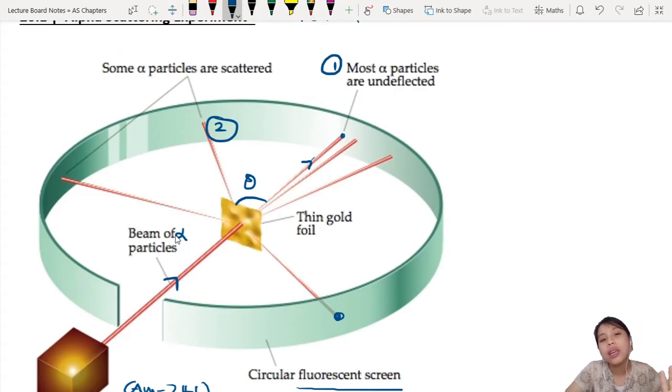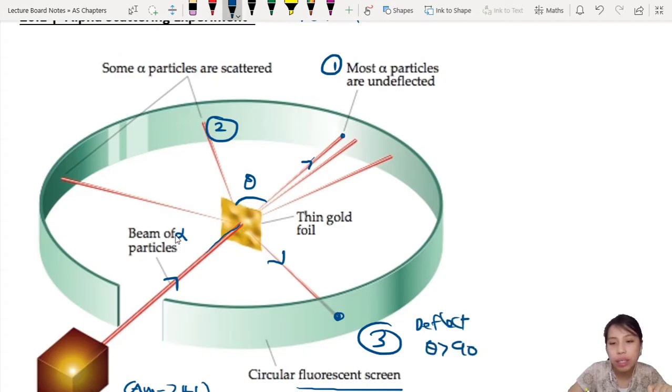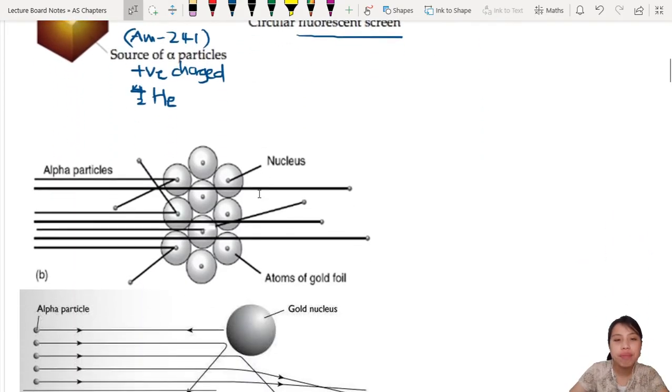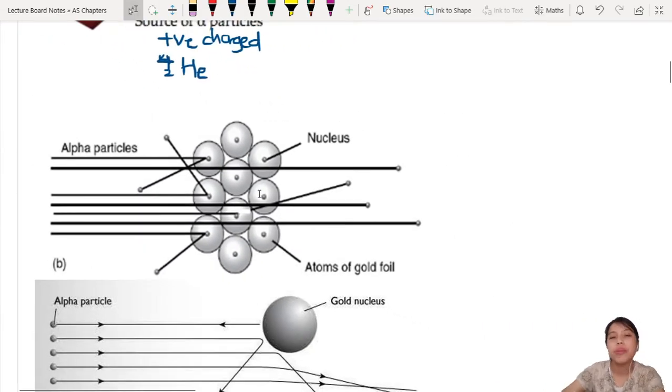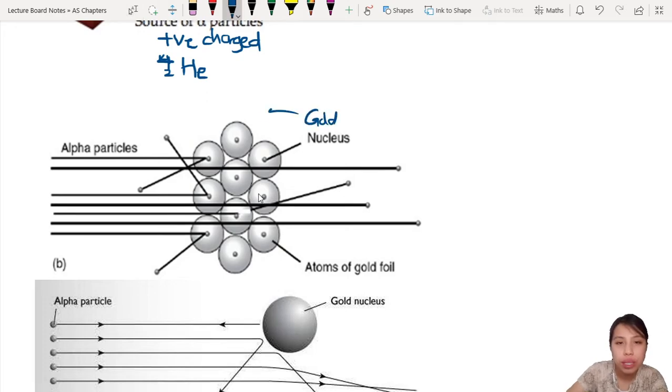Then there are some that really deflect - you shoot at the gold foil and they fly out, deflecting at very large angles greater than 90 degrees, almost as if it hit something and bounced back. Rutherford sat down, observed this, drew together his experiment, and came with a conclusion.